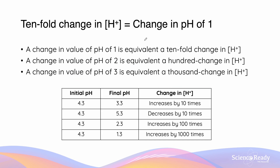From the log base 10 formula, one change in pH corresponds to a tenfold change in H+ concentration. A pH change of 1 equals a tenfold change in H+; a change of 2 equals a hundredfold change; and a change of 3 equals a thousandfold change. For example, going from pH 4.3 to 3.3 increases H+ concentration tenfold; from 4.3 to 2.3 is a hundredfold increase; from 4.3 to 1.3 is a thousandfold increase.